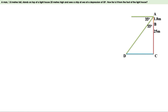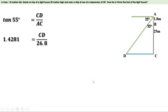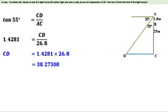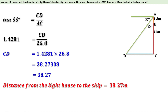The ratio between opposite side and adjacent side is tan. So, let us take tan 55. Tan 55 equals opposite side by adjacent side, or CD by AC. The value of tan 55 is 1.4281 and AC is 25 plus 1.8, or 26.8. Replacing the values, we can write 1.4281 equal to CD by 26.8. Taking 26.8 on the other side, we can write CD equal to 1.4281 into 26.8. Multiplying, we get 38.27308, approximately equal to 38.27. That is, the distance from the lighthouse to the ship is 38.27 meters.